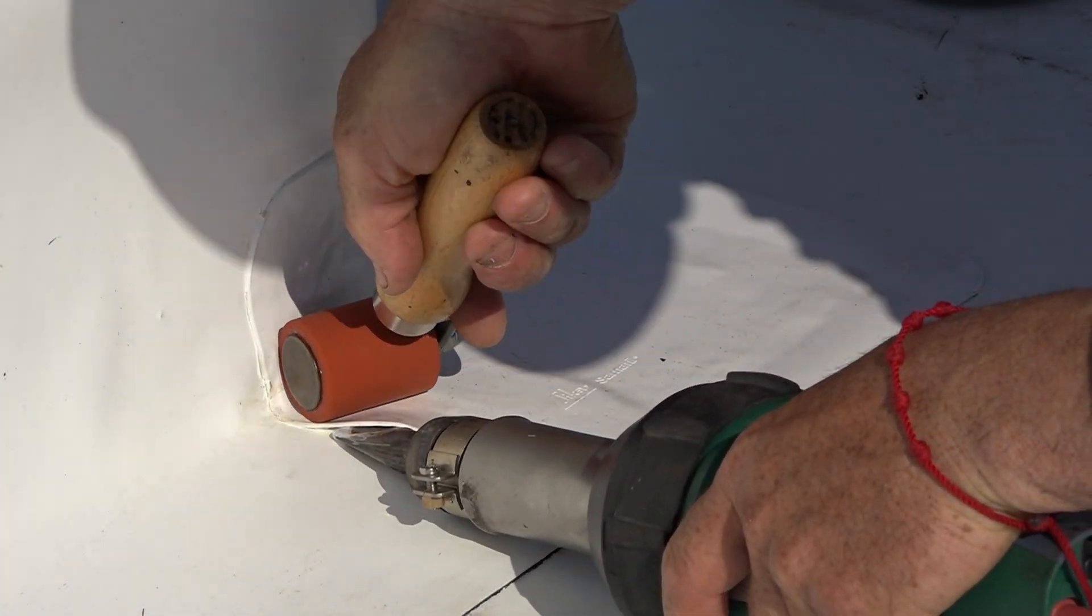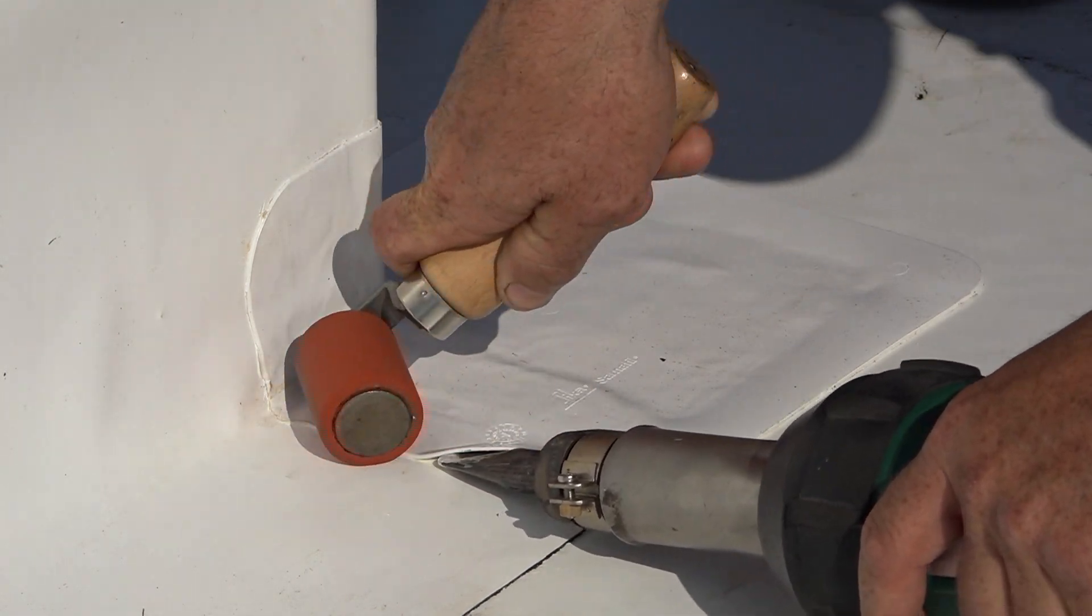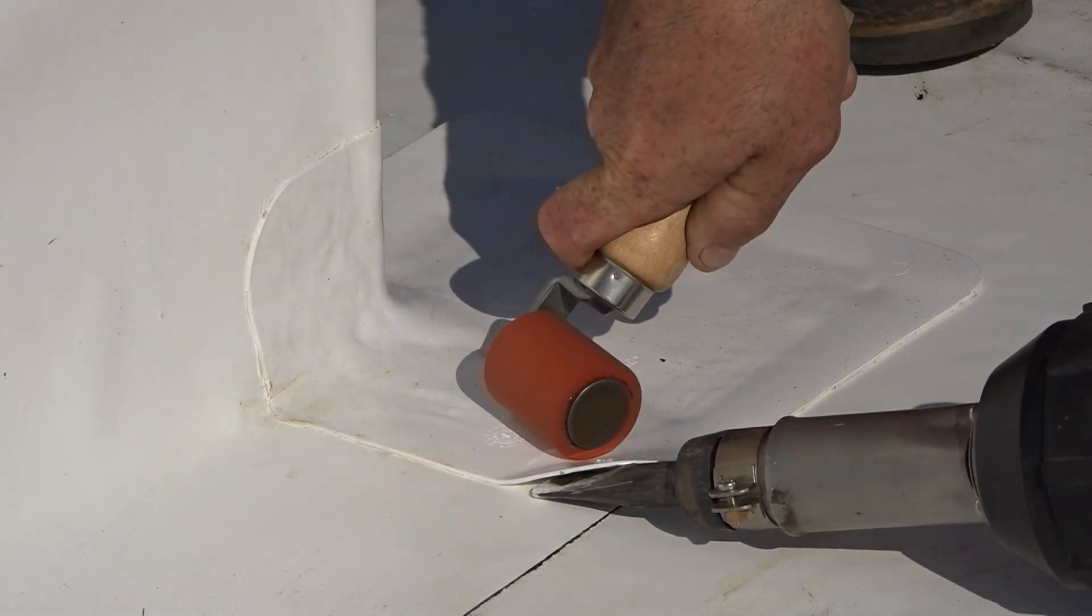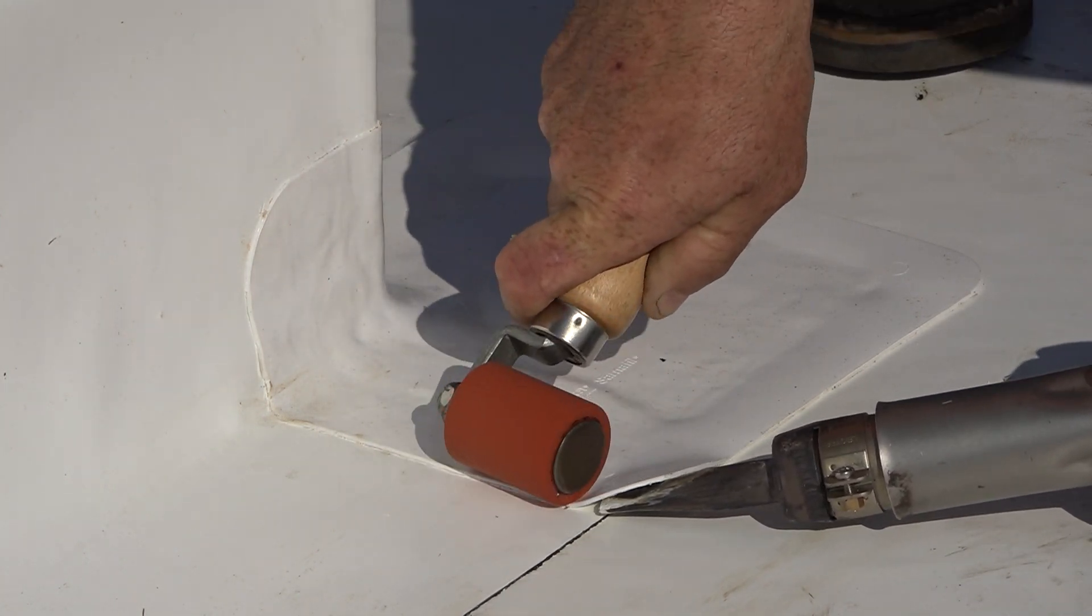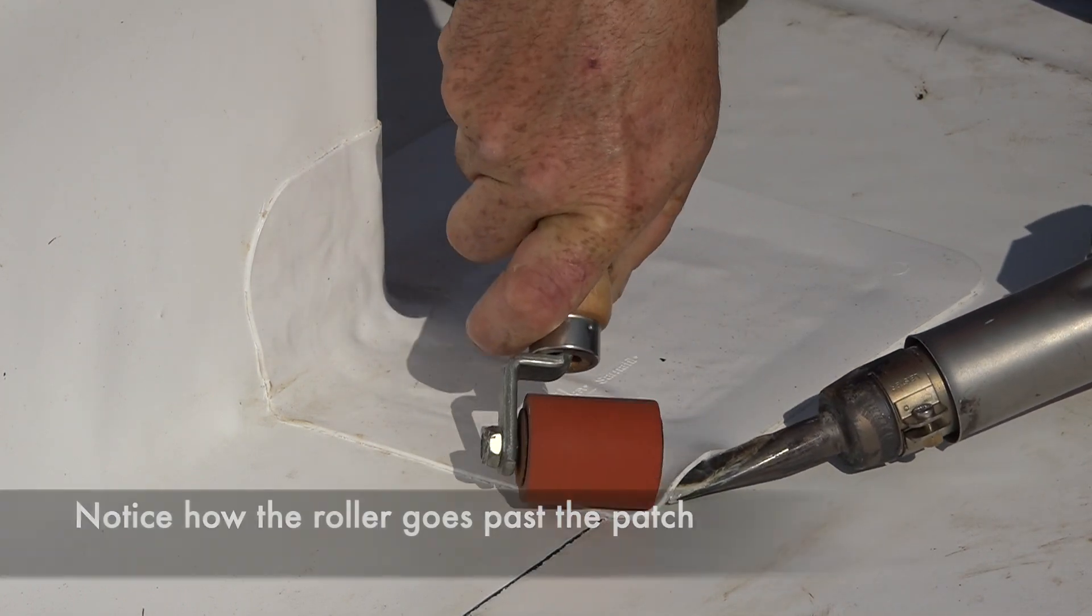And this will be his final pass on the field. And as you can see when Francisco rolls that out, that roller goes past that outside edge. You want to make sure that goes beyond that. You don't want to hold it back short.